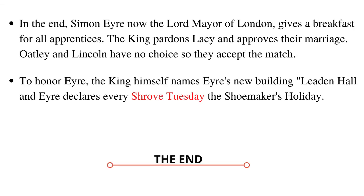In the end, Simon Eyre, now the Lord Mayor of London, gives a breakfast for all his apprentices. The king pardons Lacey and approves their marriage. Oatley and Lincoln have no choice, so they accept the match. To honor Simon Eyre, the king himself names his new building Leadenhall, and Simon Eyre declares every Shrove Tuesday the Shoemaker's Holiday.